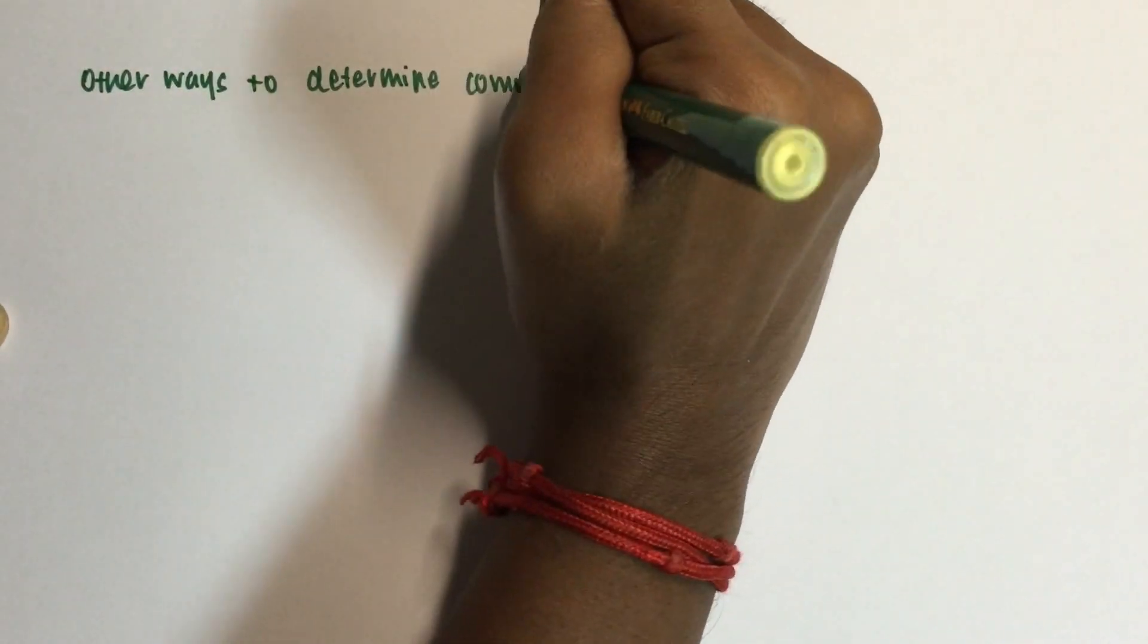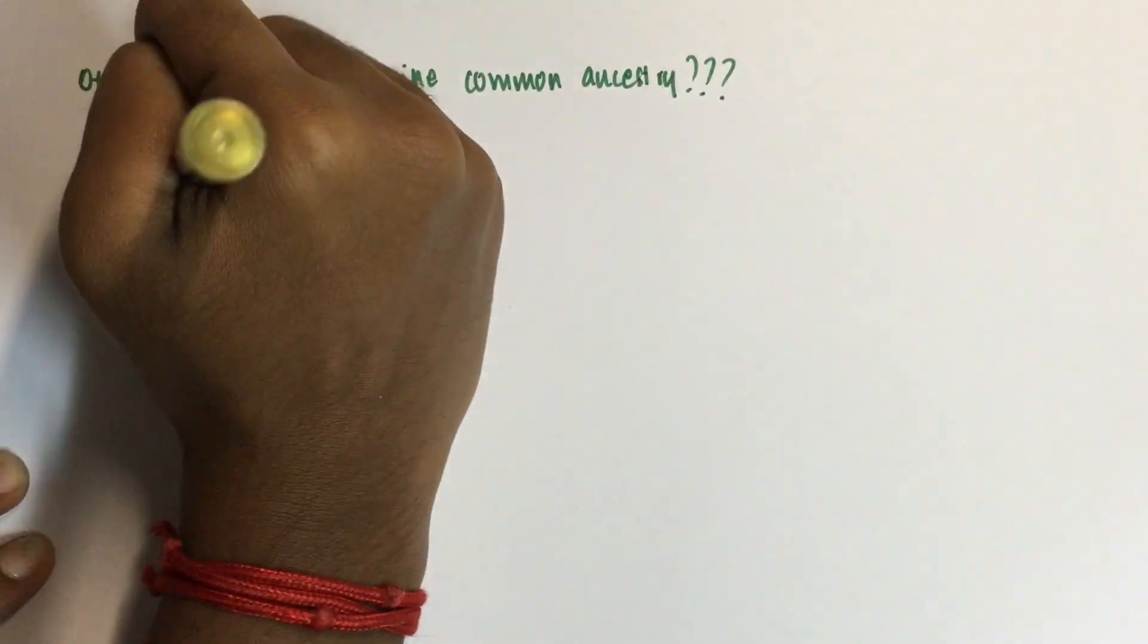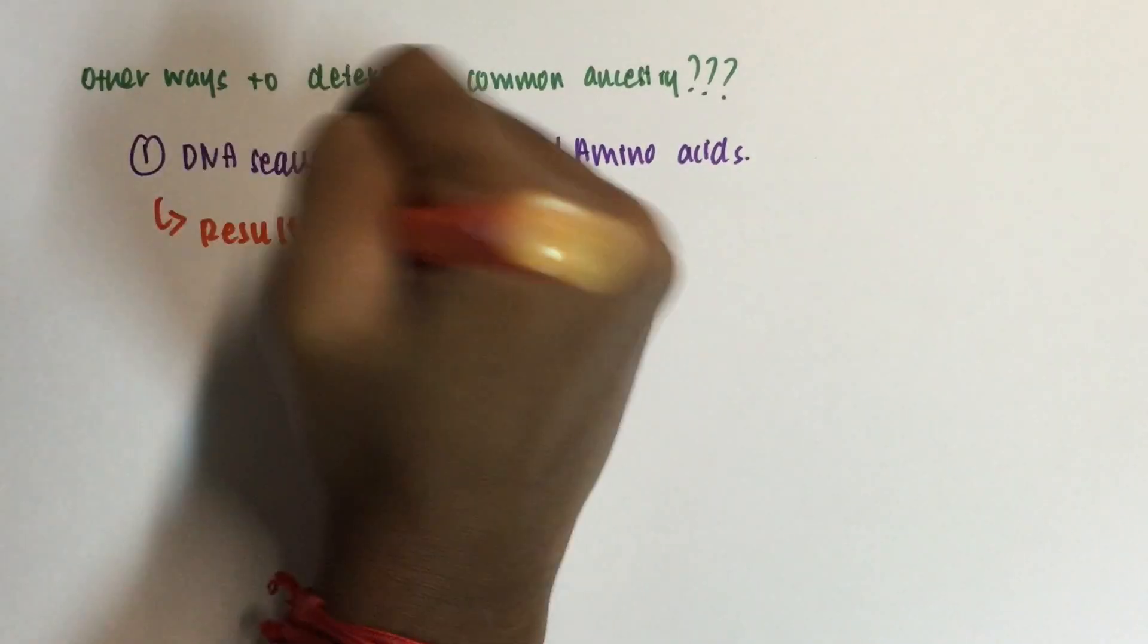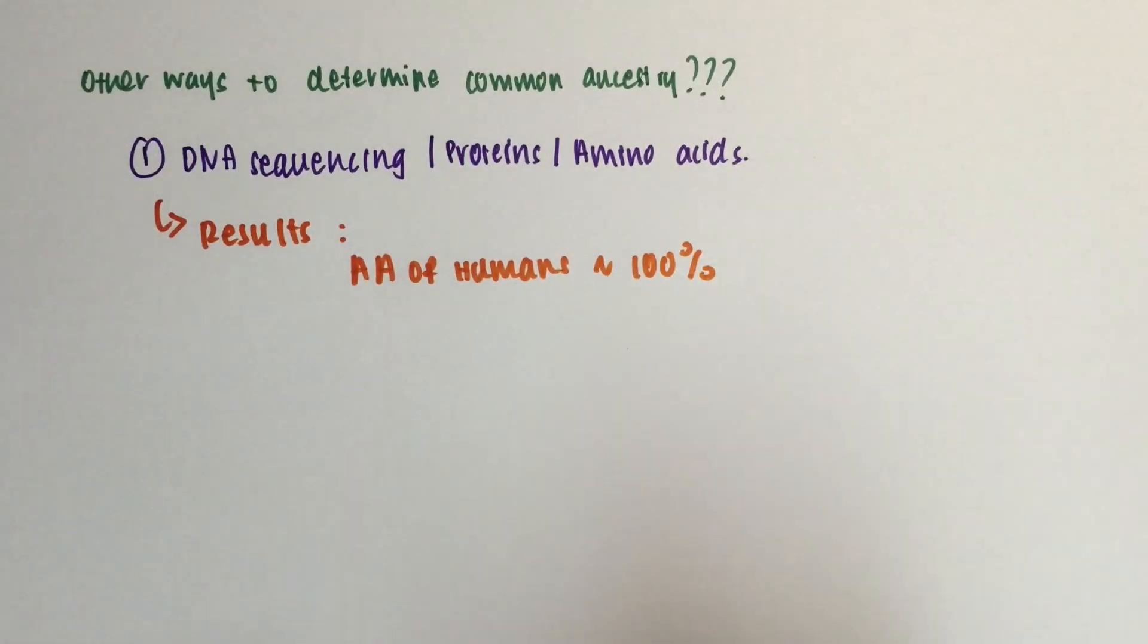Are there any other ways to determine common ancestry? Well, there is. The DNA sequencing of protein or amino acid sequencing methods are equally useful to us.